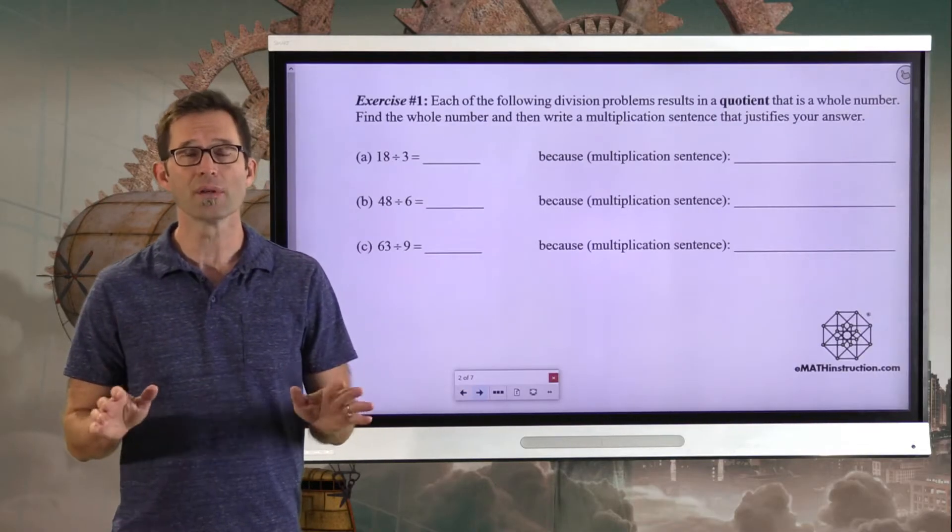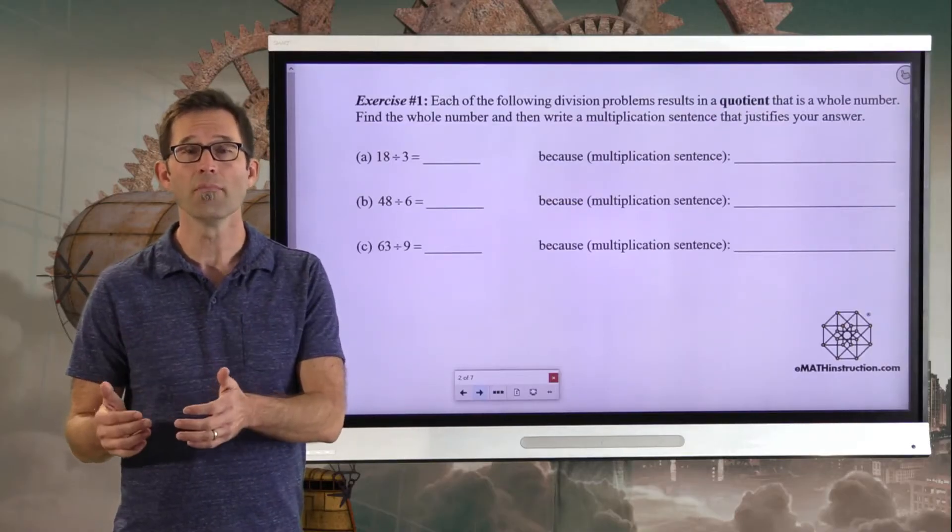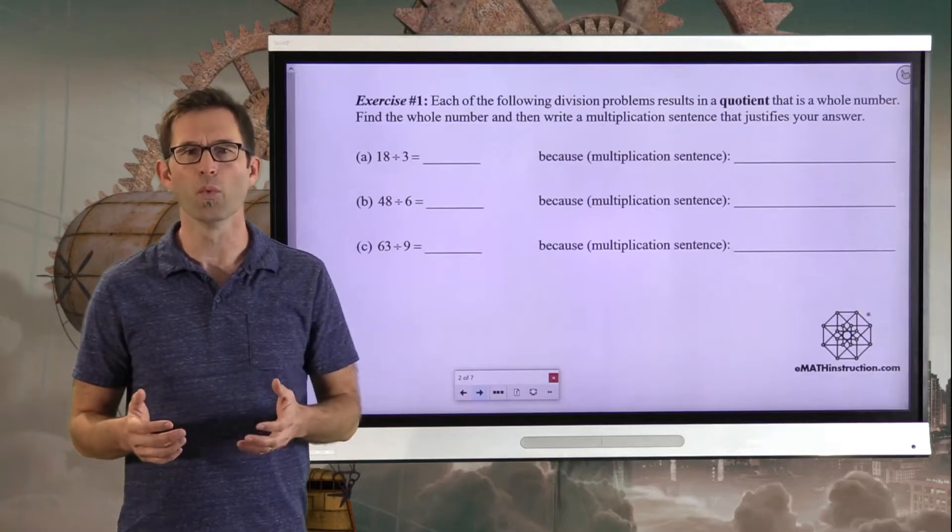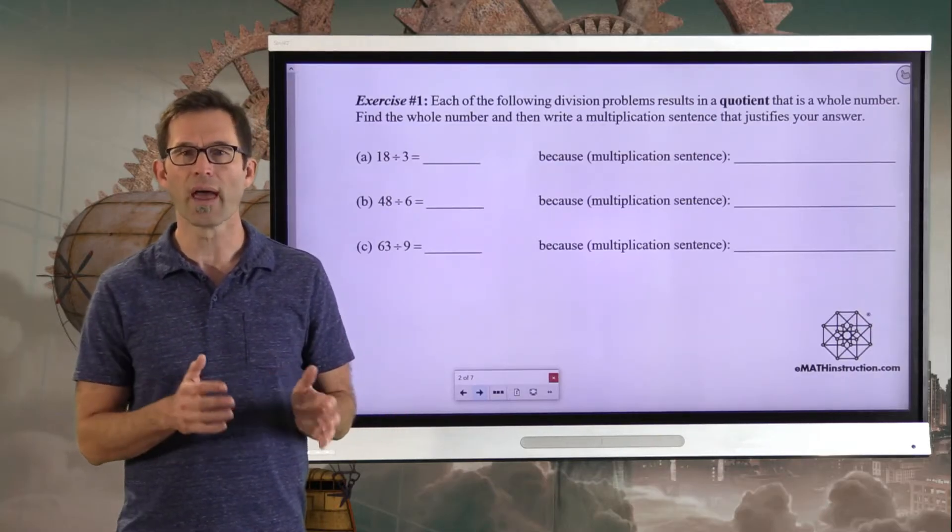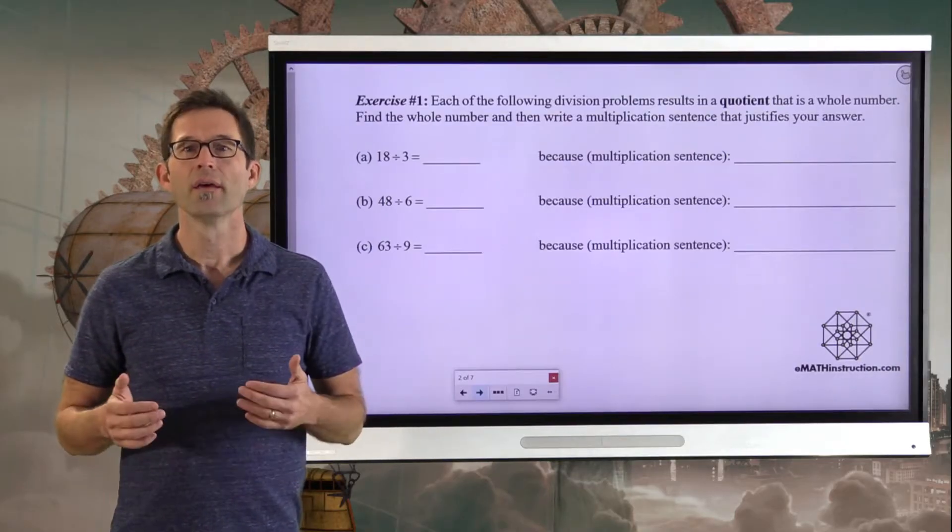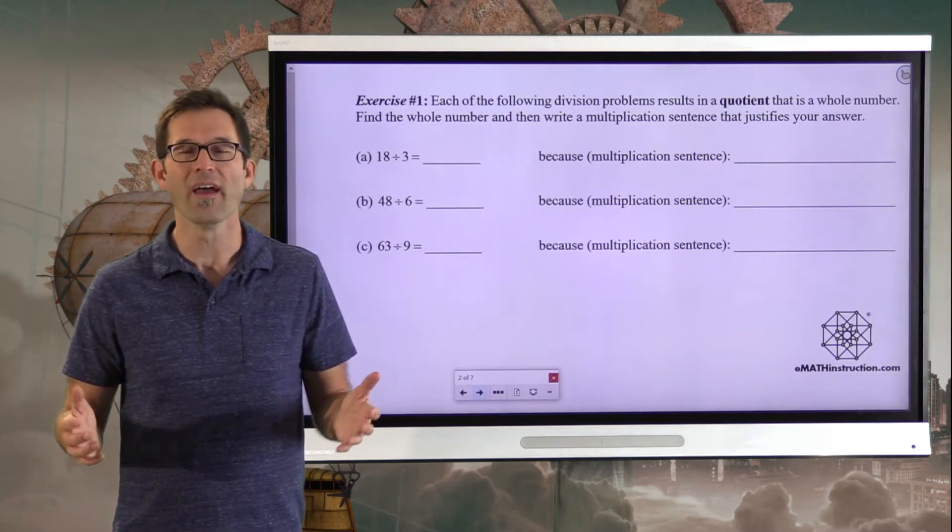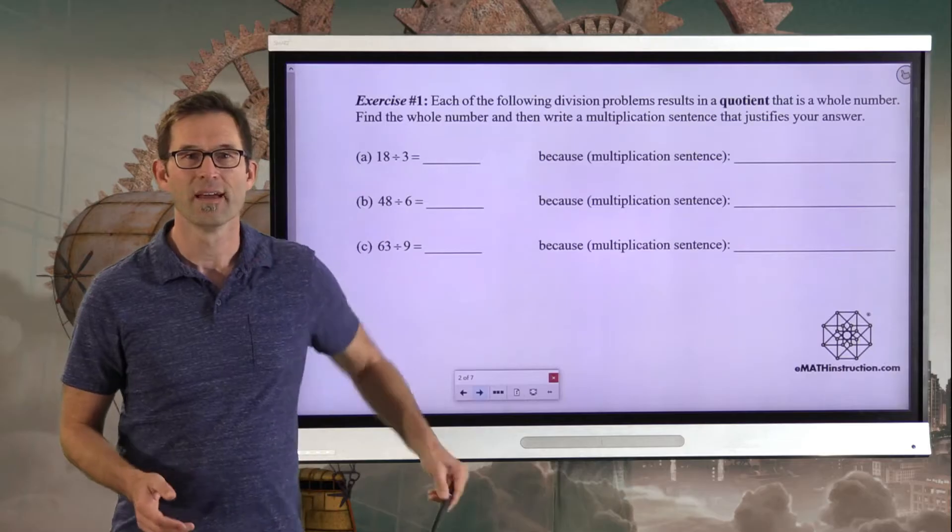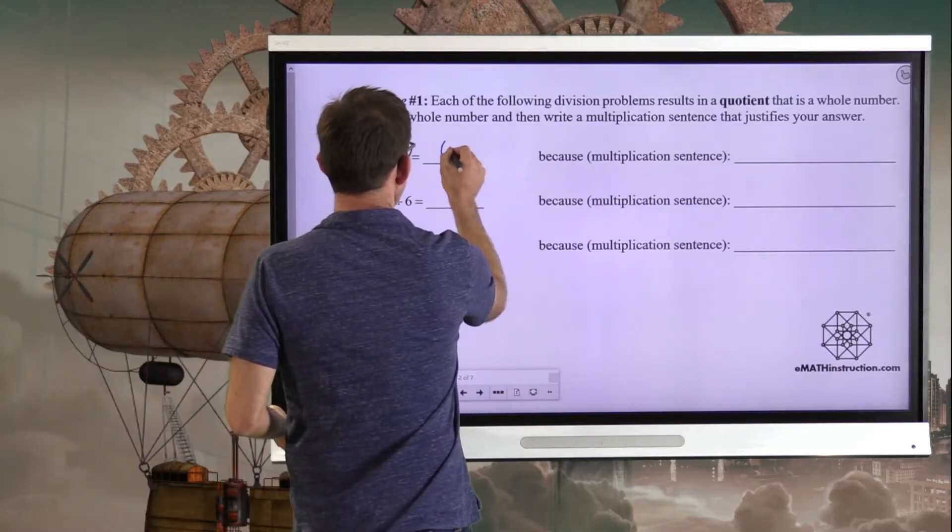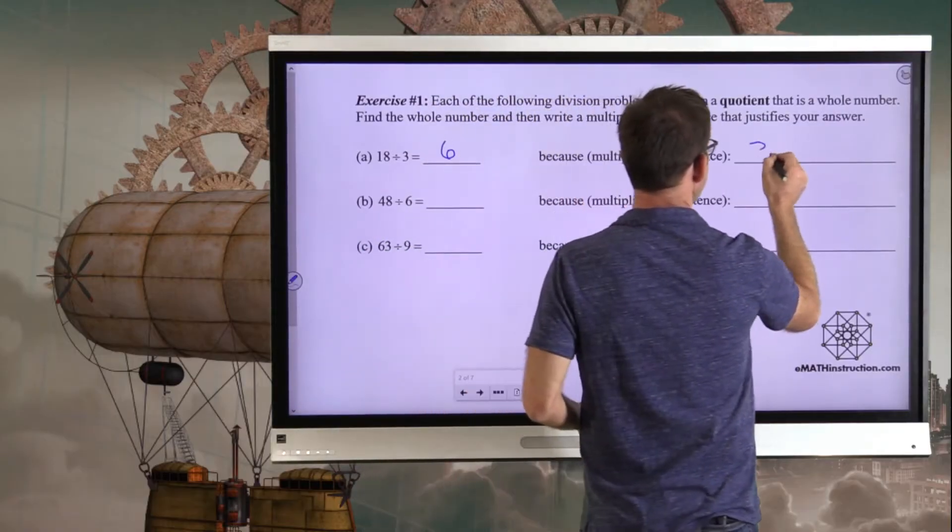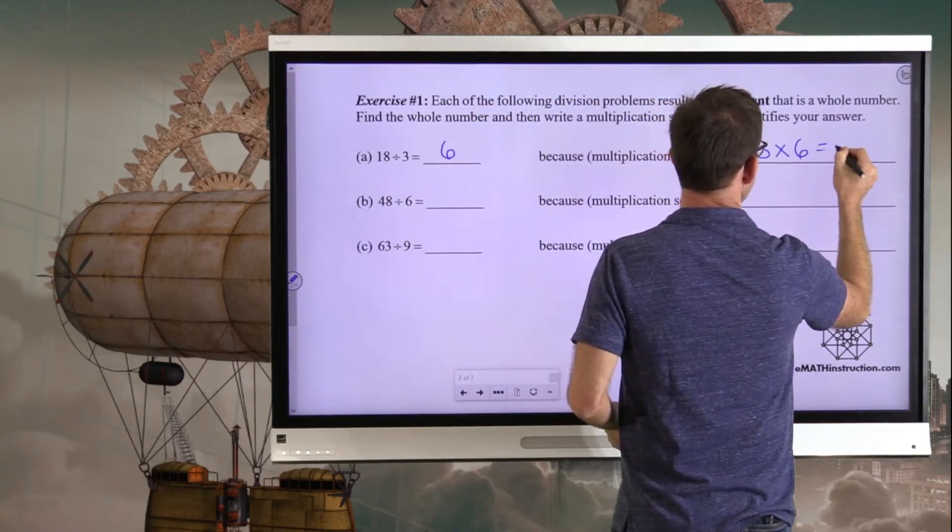So let's jump right into it. Most of division, when you first learn it, is understood by understanding it as sort of the opposite, if you will, of multiplication. So let's take a look in exercise number one at that idea. Each of the following division problems results in a quotient that is a whole number. Now, all a quotient is, is the result of a division problem. Find the whole number and then write a multiplication sentence that justifies your answer.